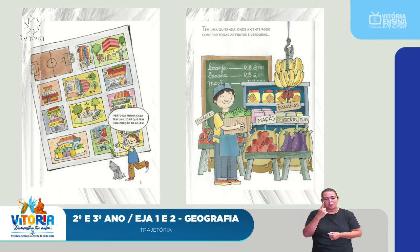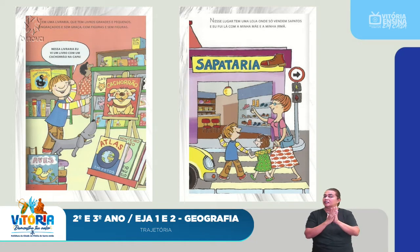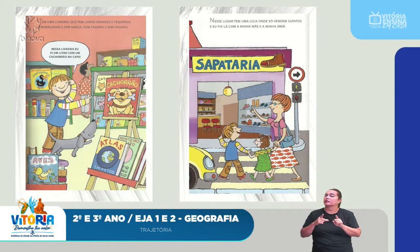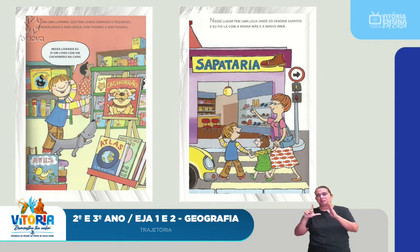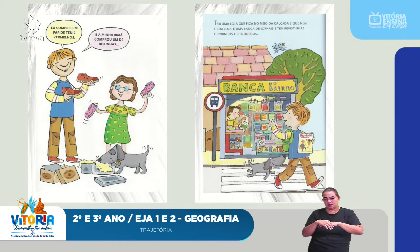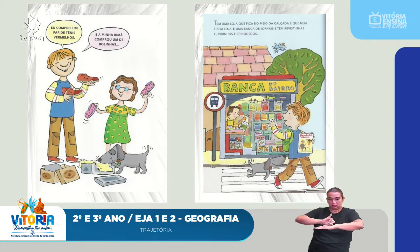There is a bookstore with books big and small, funny and not funny, with and without pictures. At the bookstore, I saw a book with a big dog on the cover. In this place there is a shoe store, and I went there with my mother and my sister. I bought a pair of red sneakers and my sister bought a pair with polka dots. There is a newsstand in the middle of the sidewalk — not exactly a store — that has magazines, small books and toys. And there is also a pedestrian crossing with traffic signs.